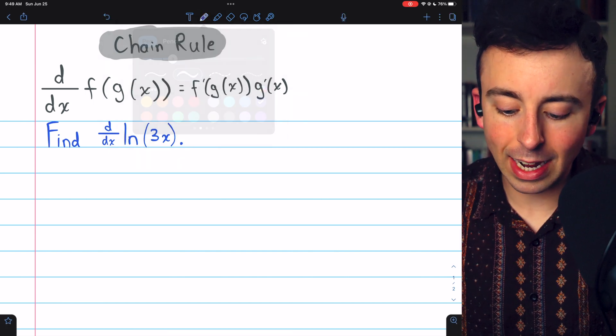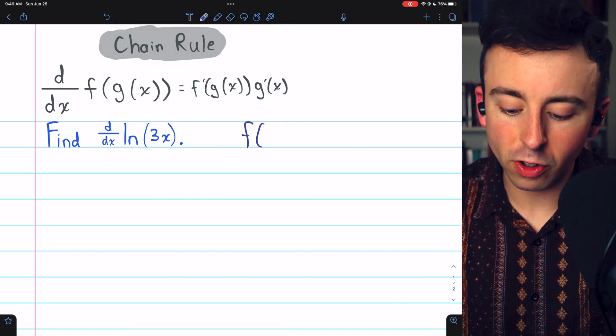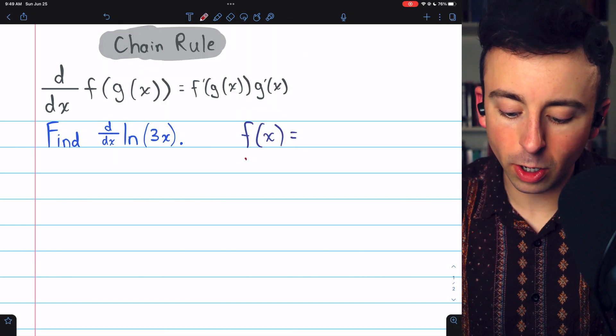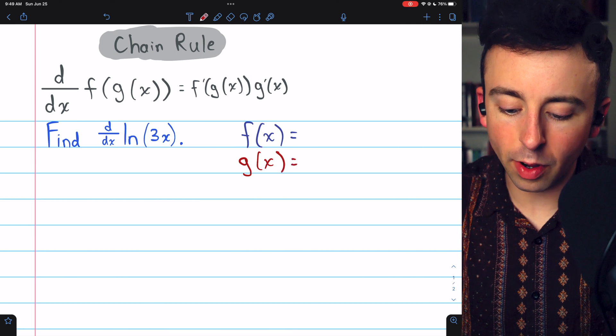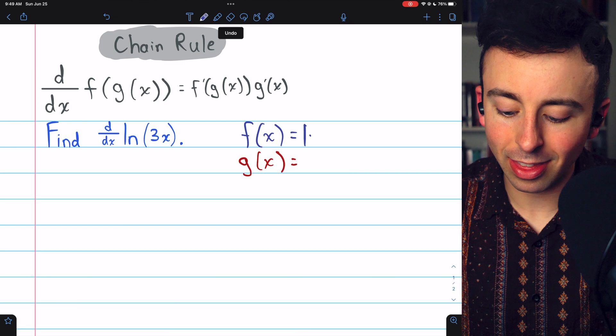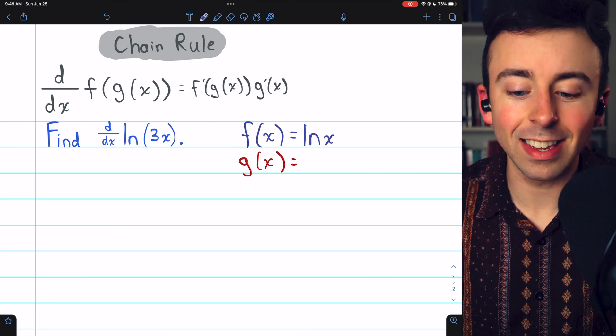So we need to accurately identify our outside function, which we'll call f of x, and our inside function, which we will call g of x. In this case, our outside function f of x is simply ln, ln of a thing, so f of x is ln x.